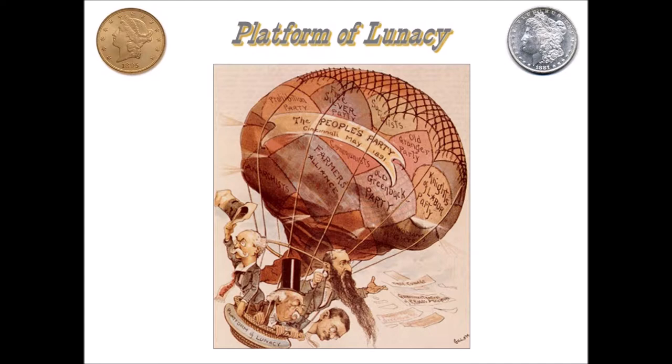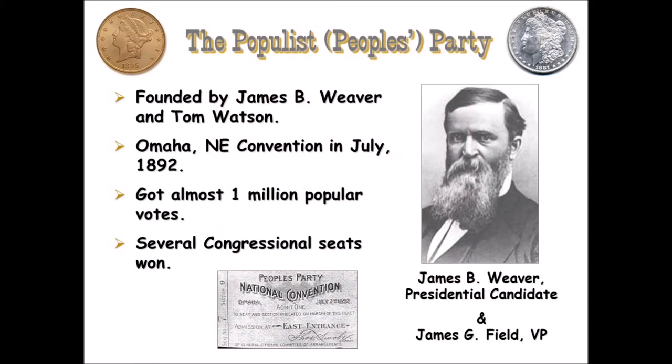This was really the first true third party in American history — a party that stood a real chance of winning elections. An editorial cartoon shows the People's Party in a hot air balloon called the 'Platform of Lunacy,' with the balloon patched together from the old Granger Party, Knights of Labor, Greenback, Farmers' Alliance, Prohibition, Socialists, Anarchists, Free Silver, and Communists. It was a patchwork party, and as a result these groups didn't always agree, so the party was always a little bit lost in what its goals were. Their presidential candidate was James B. Weaver and vice presidential candidate James Field, nominated in an open convention in Omaha, Nebraska in 1892. They received almost a million popular votes and won several congressional seats, making them a legitimate party.